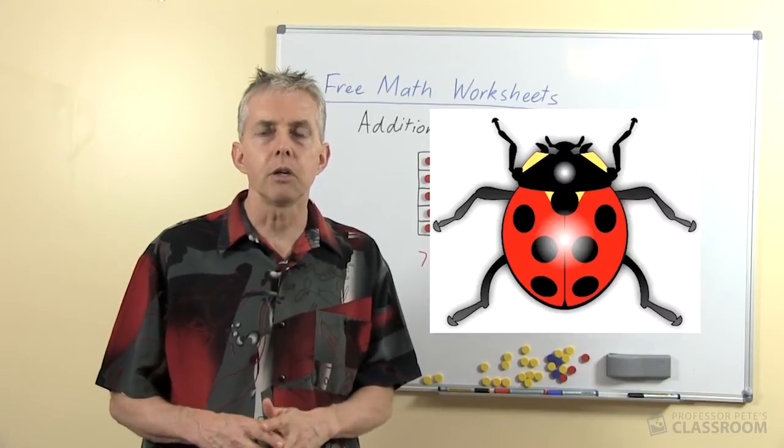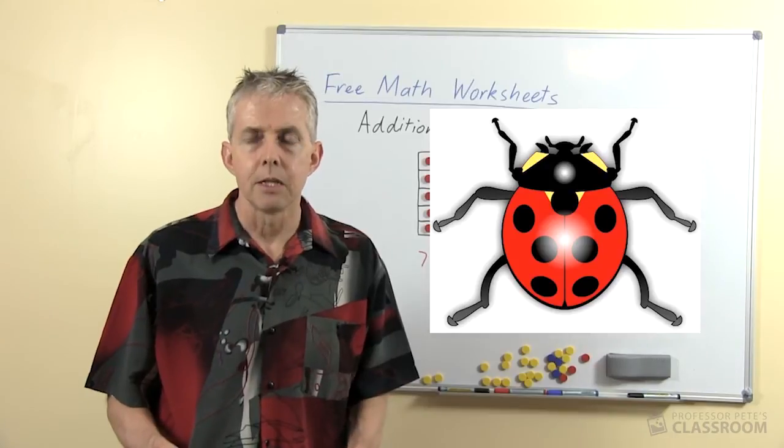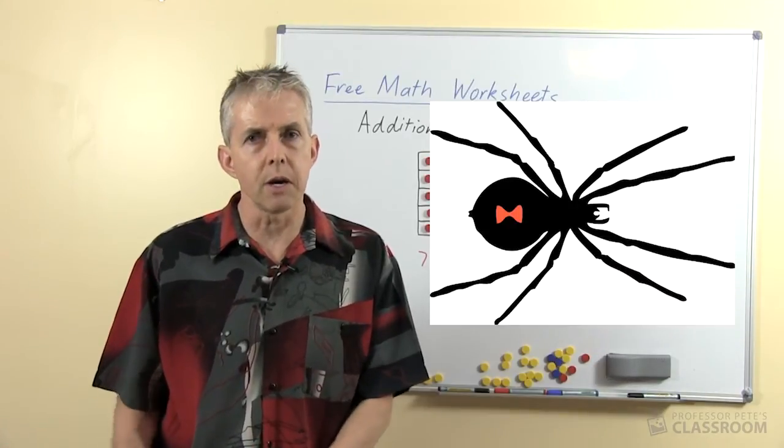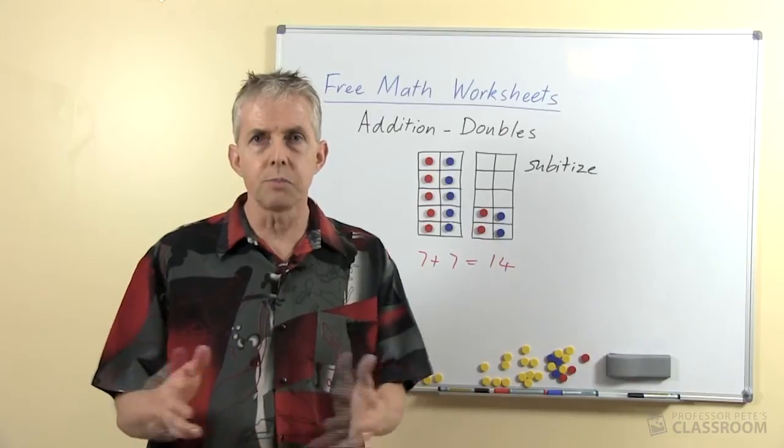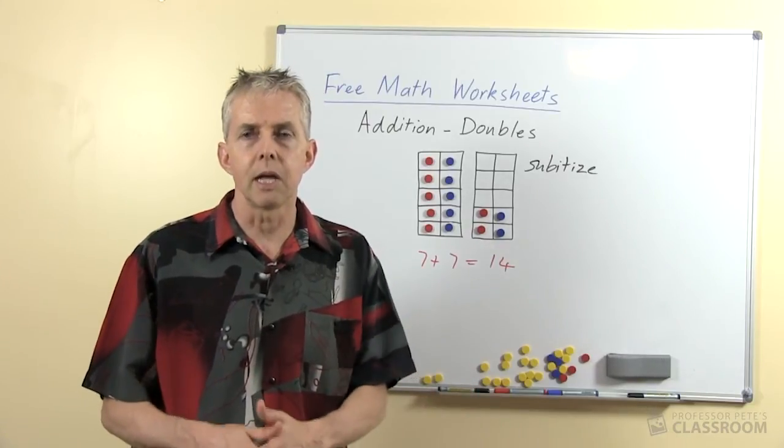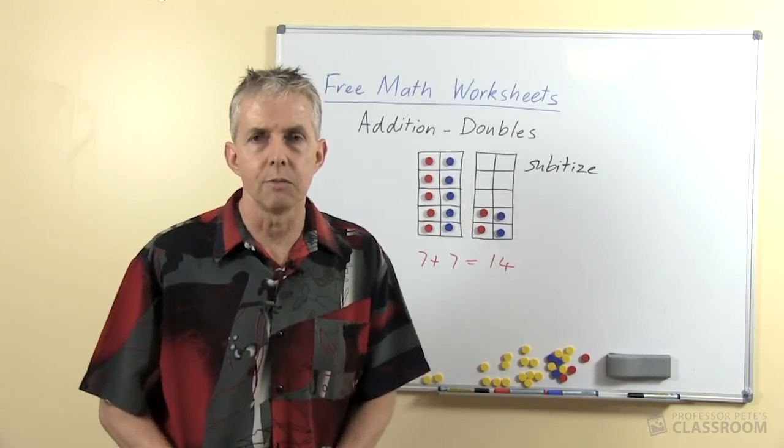Double 3 is 6, we can use the legs on an insect. Double 4 we can use the legs on a spider. Of course the children have to know that there's a difference between the legs on spiders and insects but they can become familiar with that.